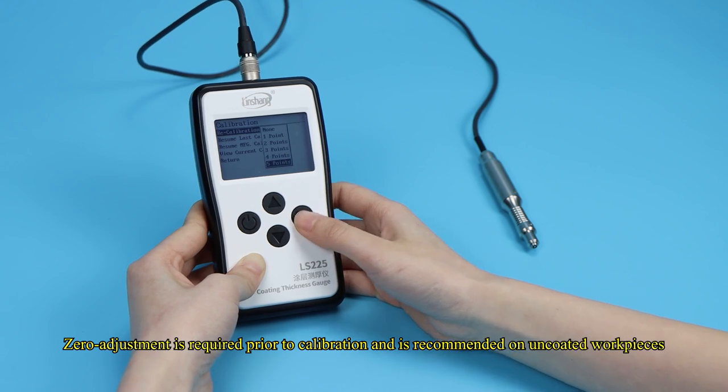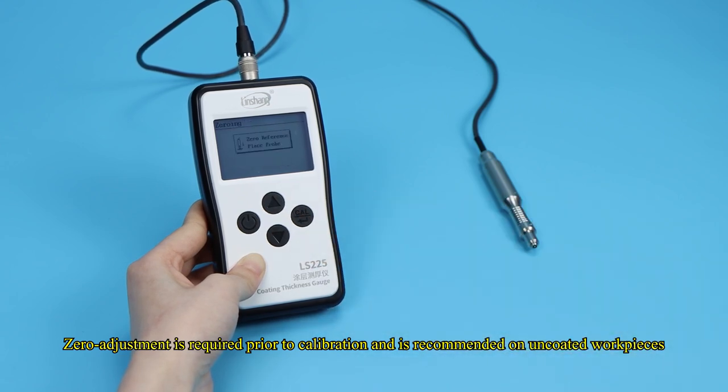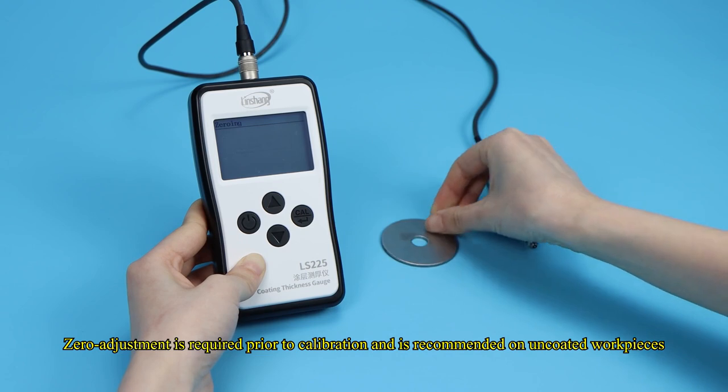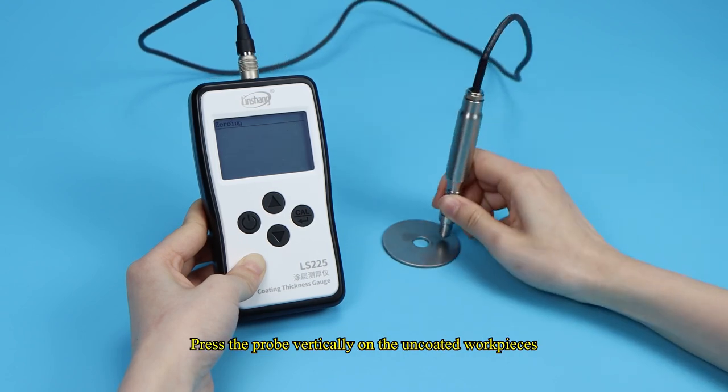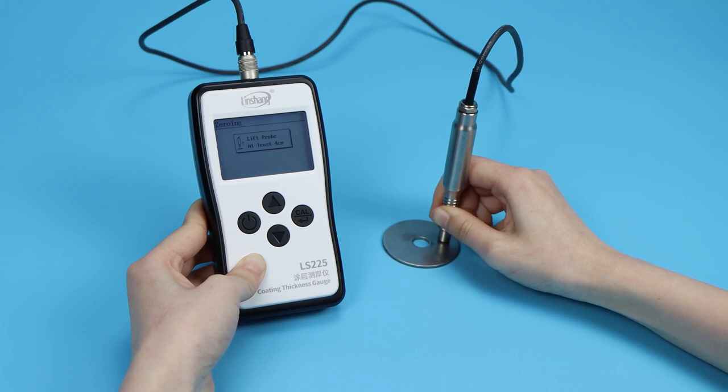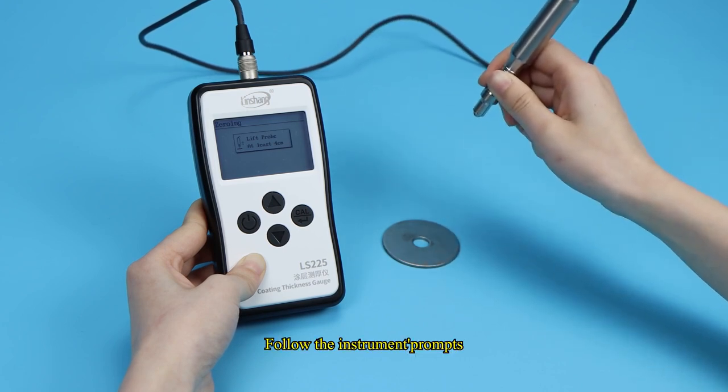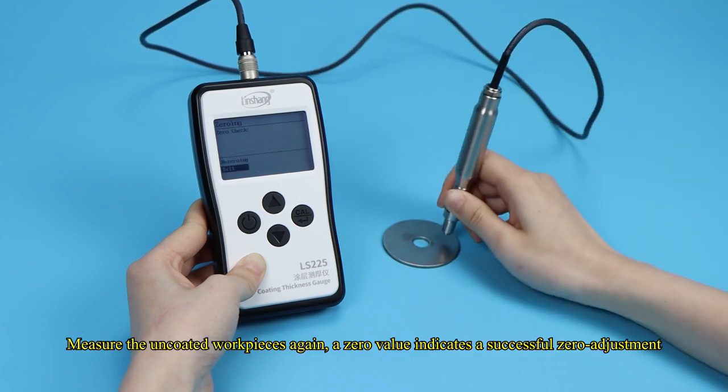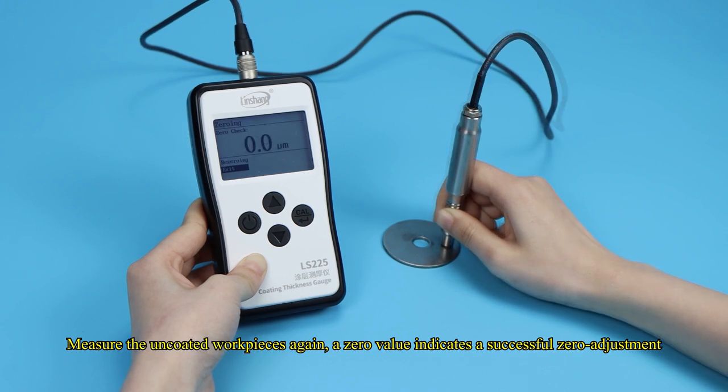Zero adjustment is required prior to calibration and is recommended on uncoated workpieces. Press the probe vertically on the uncoated workpieces. Follow the instrument prompts. Measure the uncoated workpieces again. A zero value indicates a successful zero adjustment.